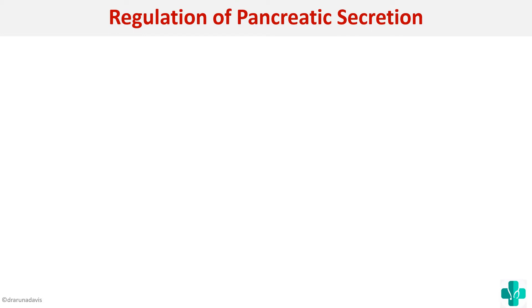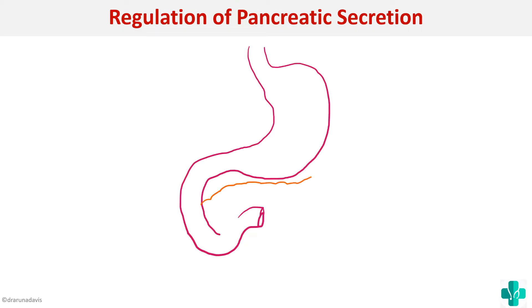I will just explain the concept first. Suppose this is our stomach showing the pancreas. You can also see that there are ducts — a cystic duct as well as a pancreatic duct shown. So just like in gastric acid secretion, pancreatic secretion also occurs in phases.